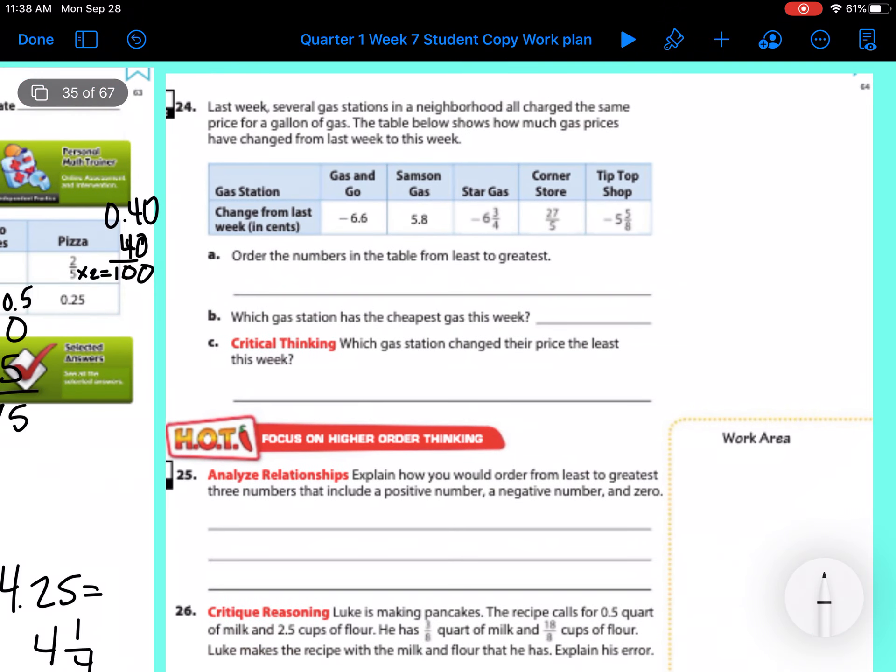So that's number 23. Let's look at 24 really quick. Last week, several gas stations in a neighborhood all charged the same price for a gallon of gas. The table shows how much gas prices have changed from last week to this week. So now they want you to order the numbers in the table from least to greatest. So smallest to largest.